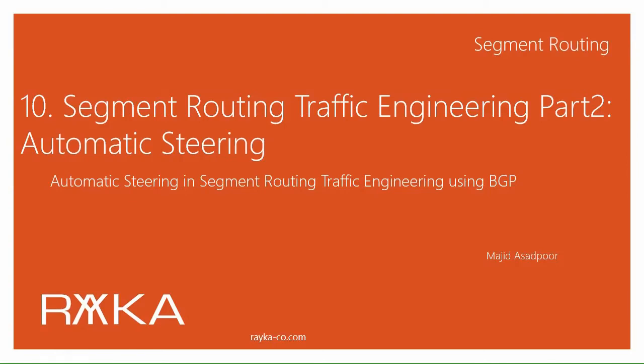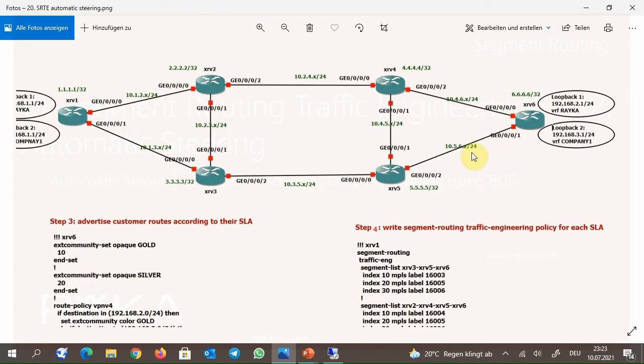In the last video we learned how to use segment routing traffic engineering policy to create a traffic engineering path, and how to manually steer traffic over those paths using binding SID. In this section we would like to learn how traffic steering works automatically using BGP.